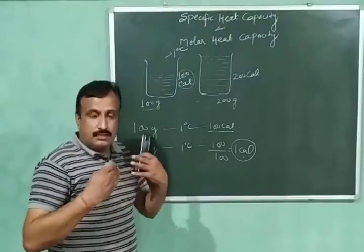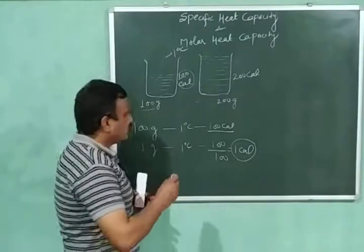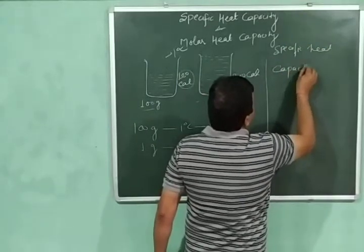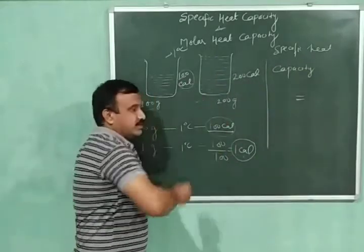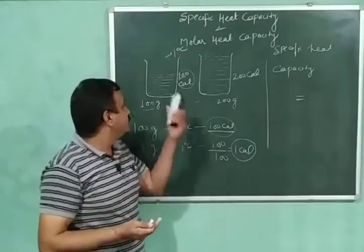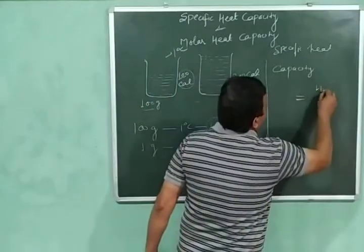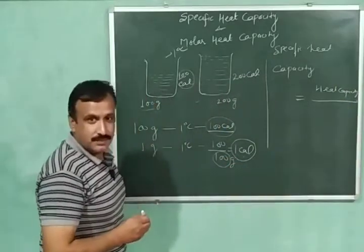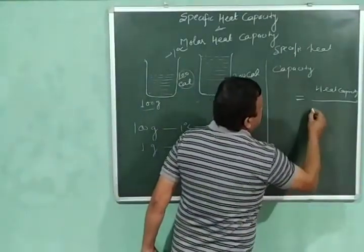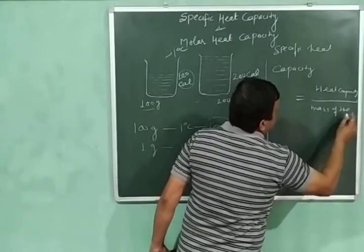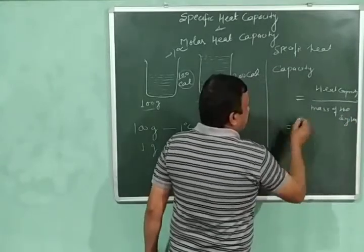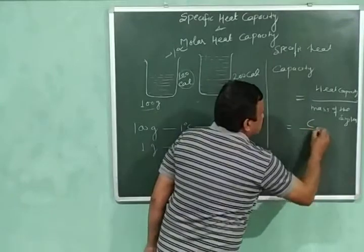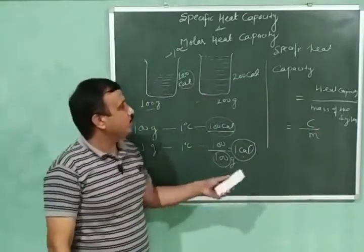We can also write a formula for specific heat capacity. This 100 calorie is the heat capacity of the system. So specific heat capacity is equal to heat capacity divided by the mass of the system. We represent heat capacity with the symbol C, and the mass of the system by M, so specific heat capacity equals C divided by M.